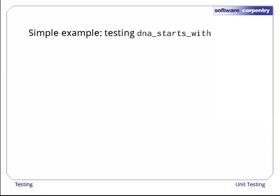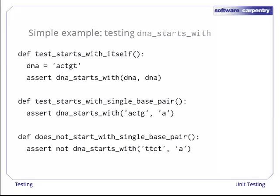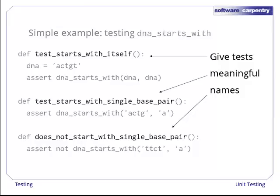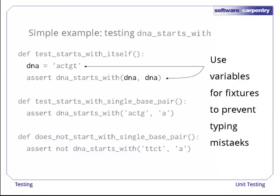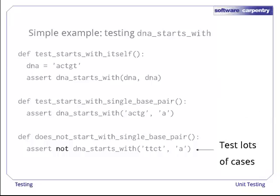To see how this works, let's look at how we'd use it to test the dna_starts_with function from the previous episode. Here are our first three tests. To help us understand our own tests, we give each function a meaningful name, something better than test1 or test2. Each test function uses assert to check the result of a single call to dna_starts_with. Test functions can create and use local variables just like other functions. It's particularly helpful to put temporary values, or values that are used in several places, in variables to avoid typing mistakes.